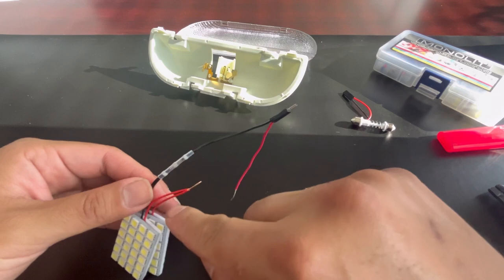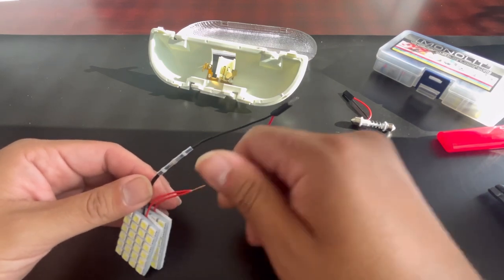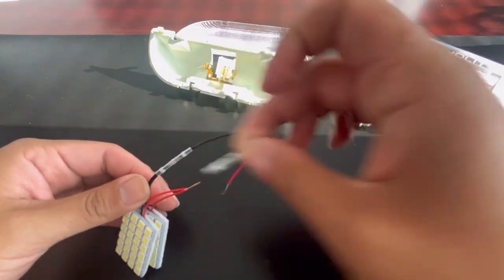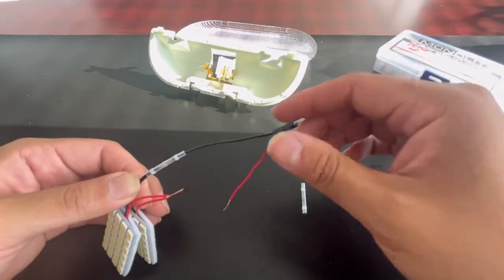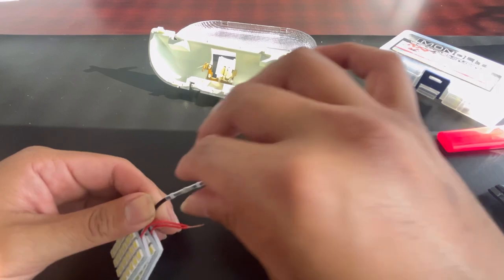Alright guys, so basically this is what we're doing - positive with positive, negative with negative. You twist them up like that, then you stick the connector in there. Get it in the middle because that's where the solder is. On this end, same deal - get it as close to the middle as you can.